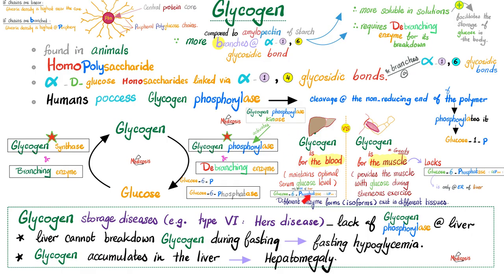The liver is altruistic, but the muscle is egotistic. The liver's glycogen gives glucose to every organ, but the muscle's glycogen gives energy only to the muscle. That's why in type 1 glycogen storage disease — von Gerke's — the patient suffers from fasting hypoglycemia, because the liver lacks glucose-6-phosphatase. Contrast that with type 5 McArdle disease, where the problem is in muscle glycogen phosphorylase. The muscles will be weak, but serum glucose won't be affected, because the muscle never gave glucose to the blood anyway.